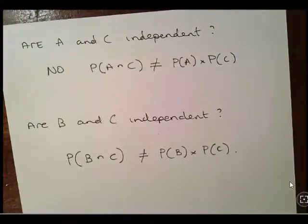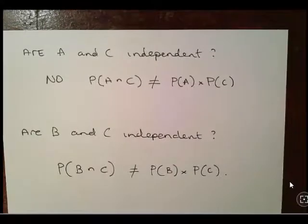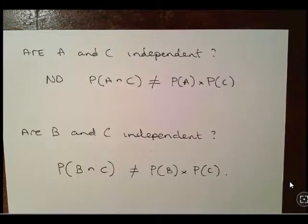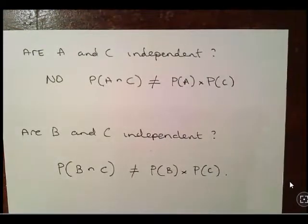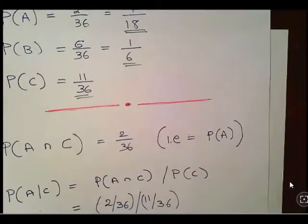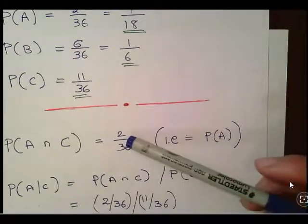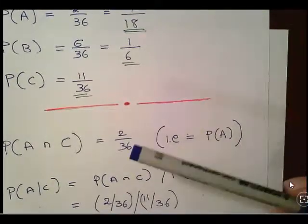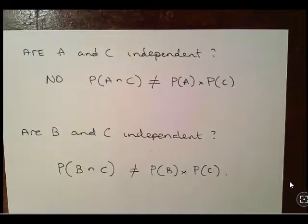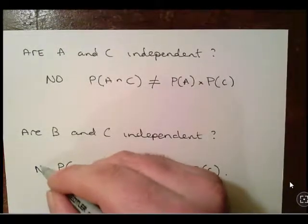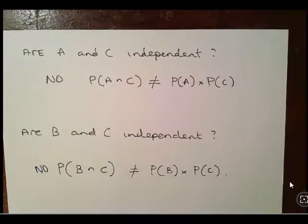Finally, are A and C independent? No. P(A) = 2/36 and P(C) = 11/36, but P(A) × P(C) does not equal P(A and C), so they are not independent. Likewise, B and C are not independent because P(B and C) is not equal to P(B) × P(C).